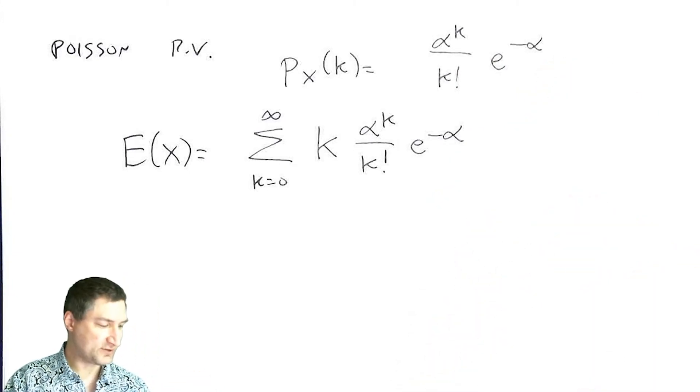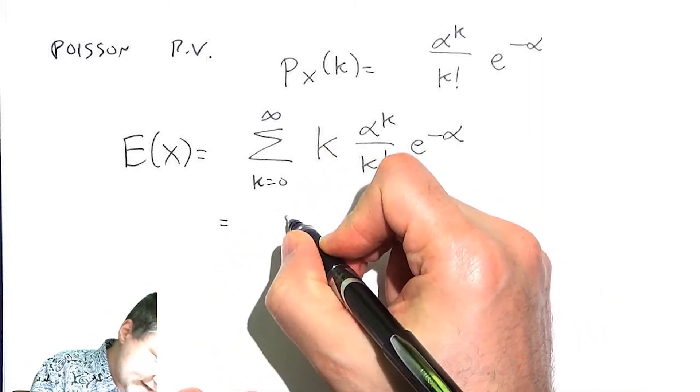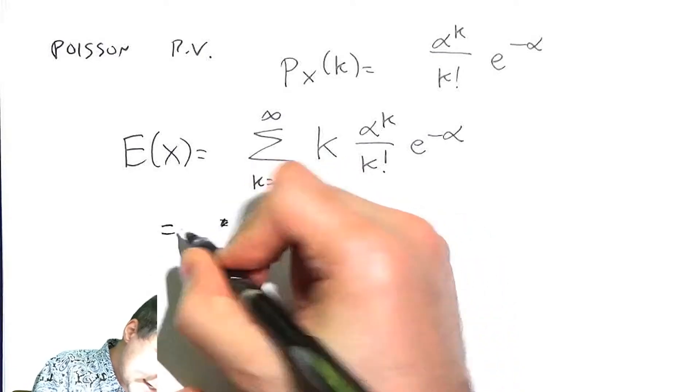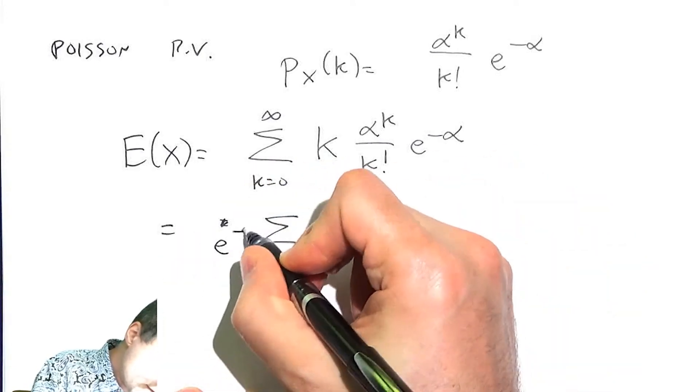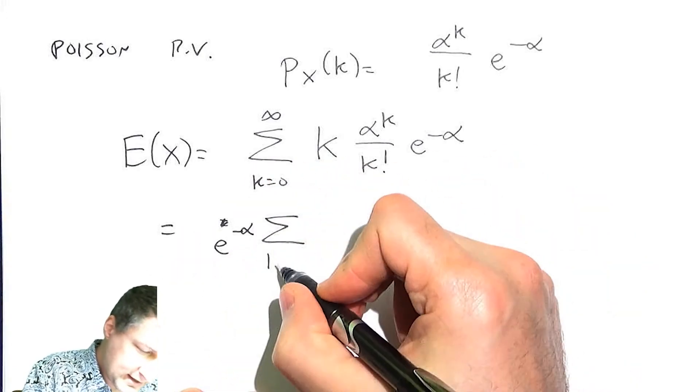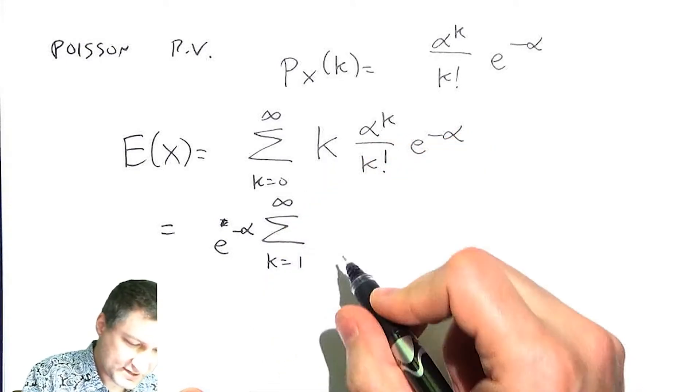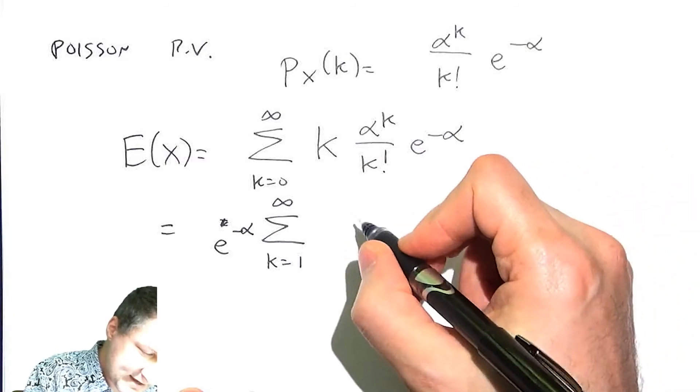Well, I have to sum up over all my possible outcomes, k alpha to the k over k factorial e to the minus alpha. Now, this looks like even somehow worse than the previous thing I had to compute, but actually this is not as bad. So what I'm going to do is I'm going to take out the e to the minus alpha, because that doesn't depend on k, and I'm going to sum from k equals 1 to infinity, because when k equals 0, this thing zeros out.